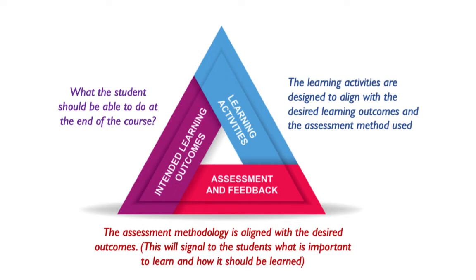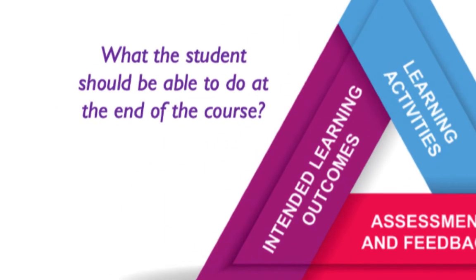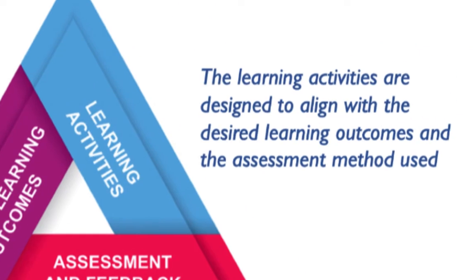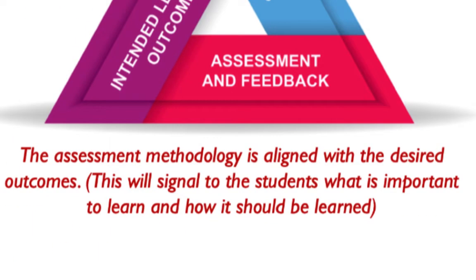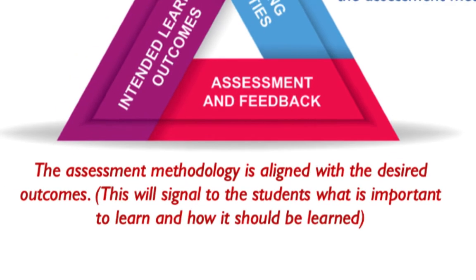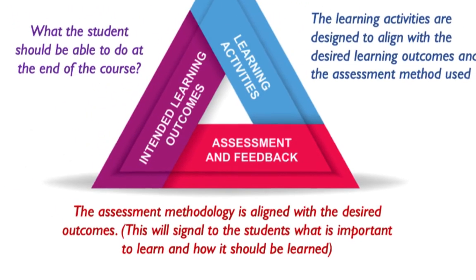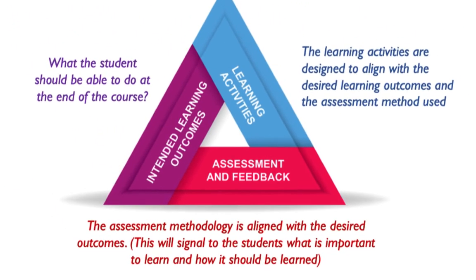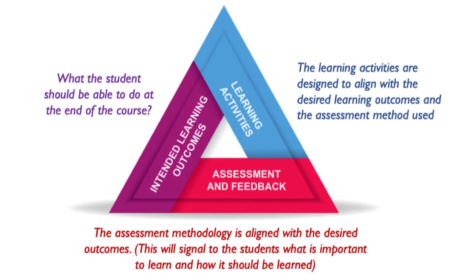Looking at this model, we can see that it depicts a clear and close interrelation between three core elements: the intended learning outcomes, the learning activities, and the assessment and feedback activities. Biggs suggests that if there is a misalignment of any of these elements, then there is a much higher risk that the students will become disengaged.